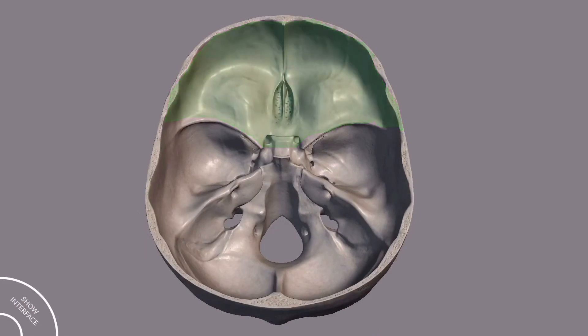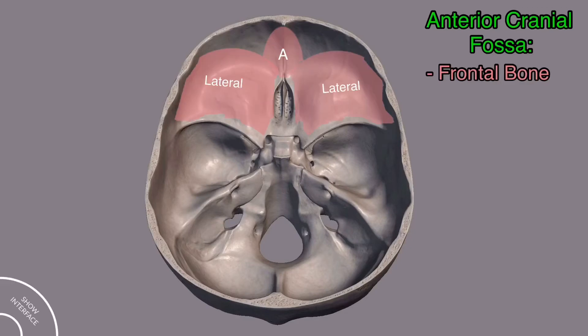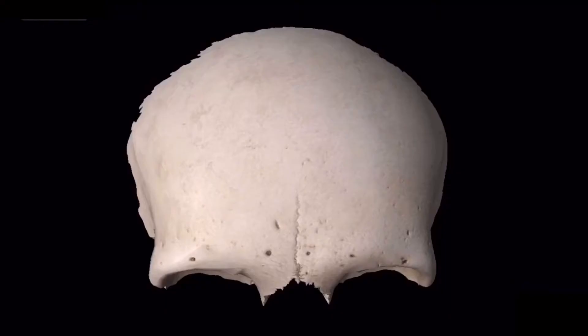The frontal bone forms the floor of the anterior cranial fossa in the anterior and lateral direction. Other bones that contribute to forming the floor of the anterior cranial fossa are the ethmoid bone and the sphenoid bone. Now we come to the nasal part.